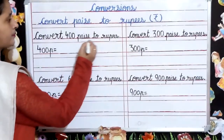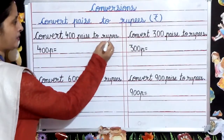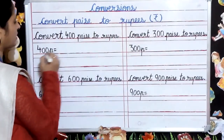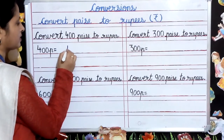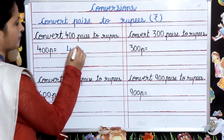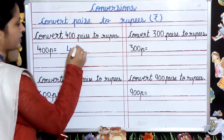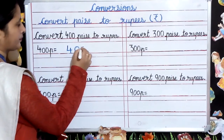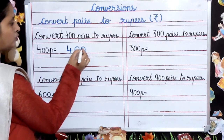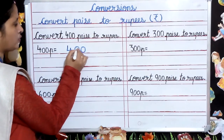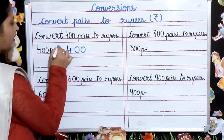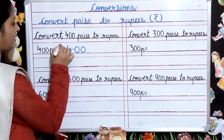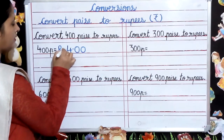Convert 400 paise to rupees. For converting 400 paise to rupees, first we will write 400, then we will count 2 digits from the right — 1, 2 — and put a point here, and write rupees in the beginning.